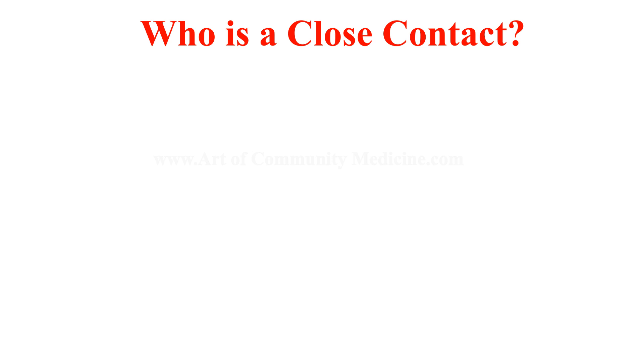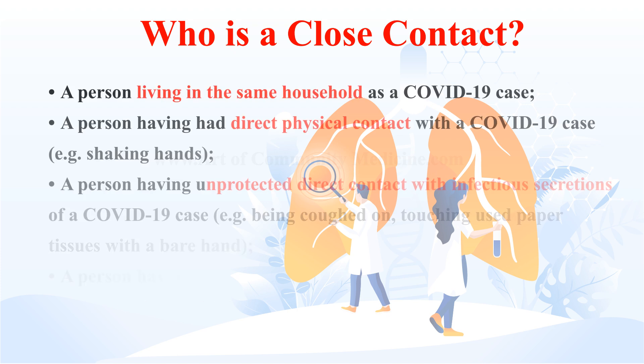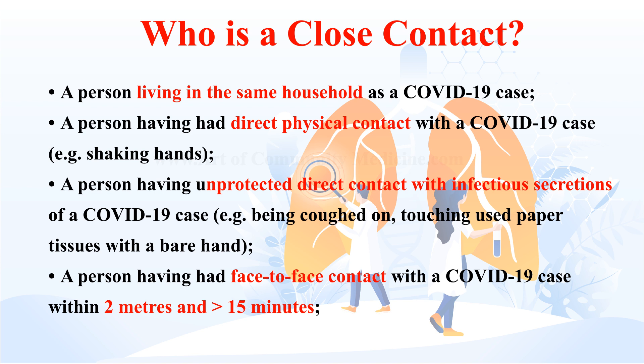What is a close contact of a probable or confirmed case? It is defined as: a person living in the same household as a COVID-19 case; a person having direct physical contact with a COVID-19 case, that is, shaking hands; a person having unprotected direct contact with infectious secretions of a COVID-19 case, for example being coughed on or touching used paper tissue with a bare hand; or a person having face-to-face contact with a COVID-19 case within 2 meters and for more than 15 minutes.